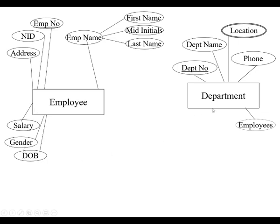Over here you have a department entity with its attributes. Department has a relation to employees — we'll get to that later — but what we're doing now is describing what makes a department and what makes an employee.